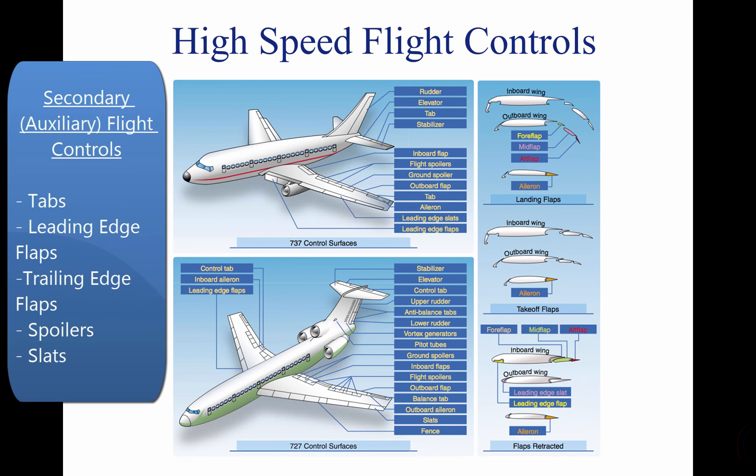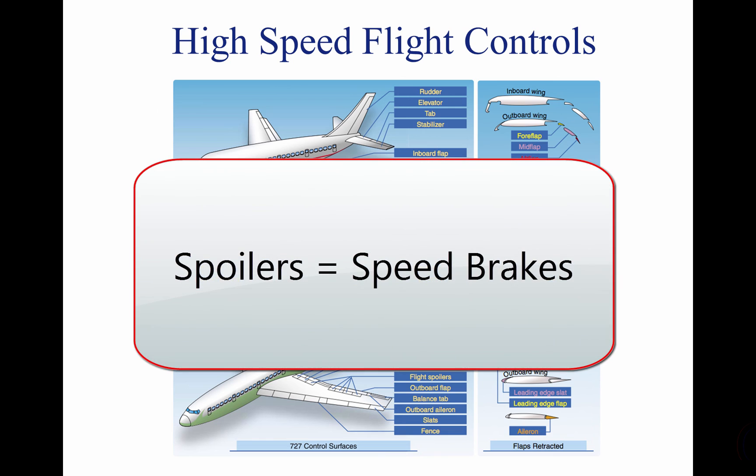Secondary or auxiliary flight controls include tabs, leading-edge flaps, trailing-edge flaps, spoilers, and slats. Spoilers are used as speed brakes to slow down high-speed aircraft. They can also be used to help turn the aircraft because the ailerons are quite small.